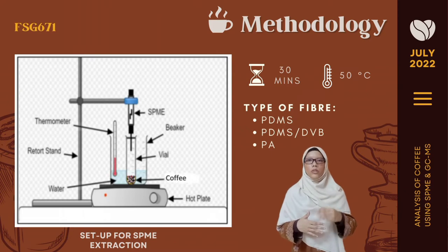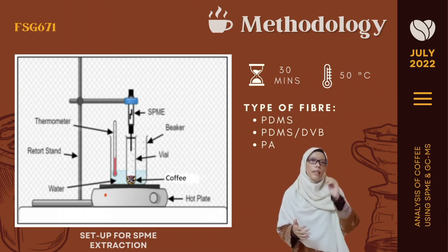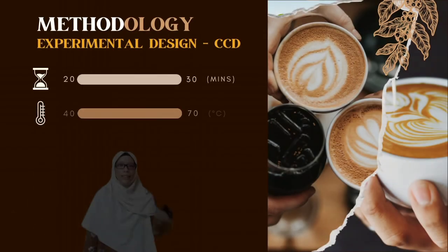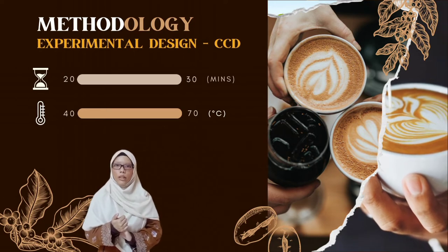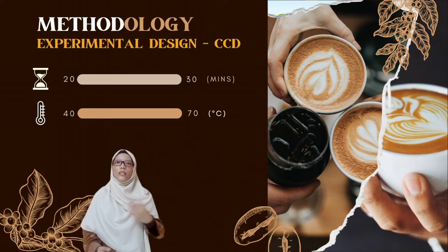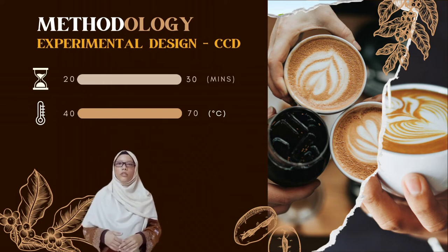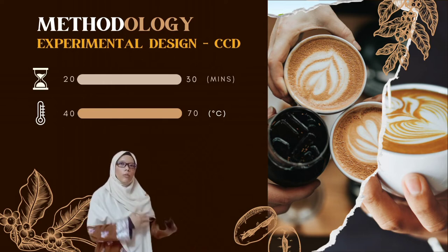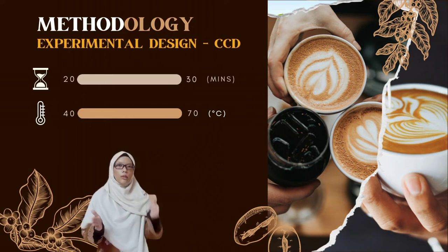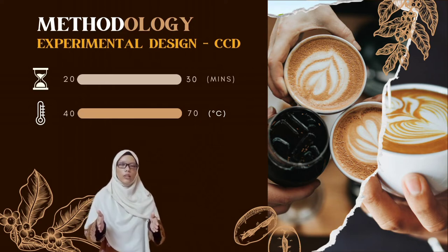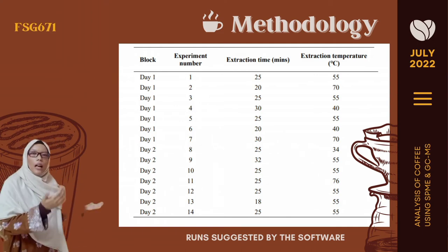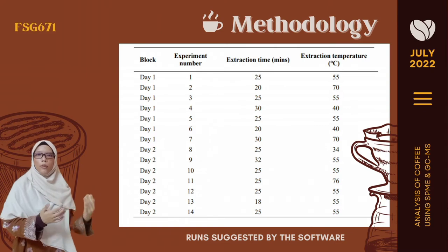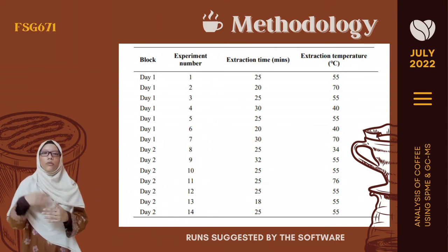The first part of the study examines three types of fiber: PDMS, PDMS-DBB, and PA. For the second part, central composite design (CCD) is employed rather than one-factor-at-a-time as the optimization method, to study the effect of extraction time and extraction temperature on SPME efficiency. The values are set in the range of 20 to 30 minutes and 40 to 70 degrees Celsius respectively, based on previous studies. The generated parameter values from the design software are shown in the figure beside me.